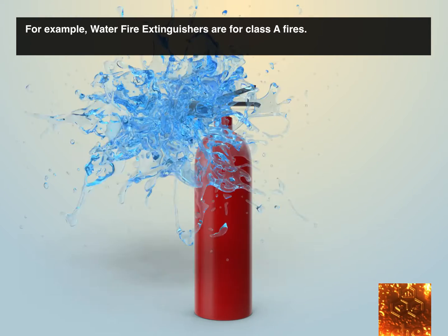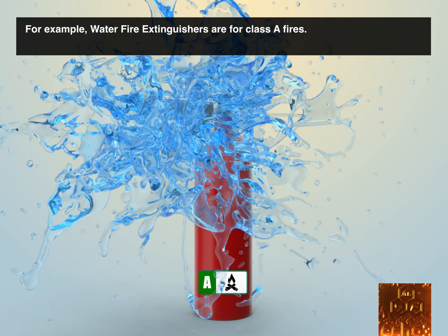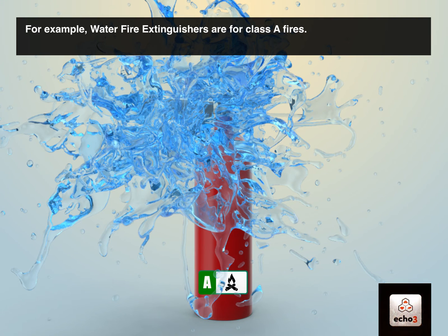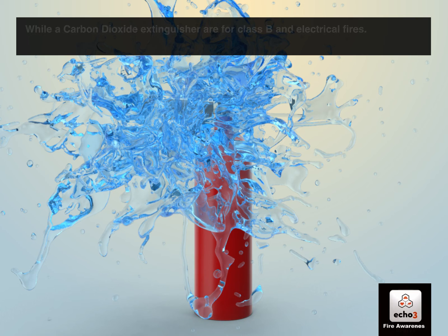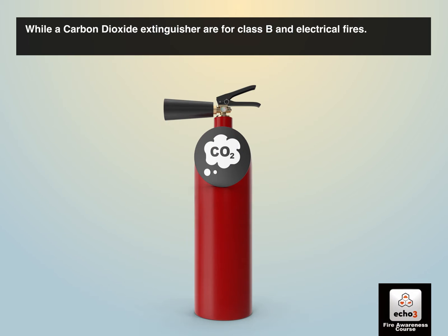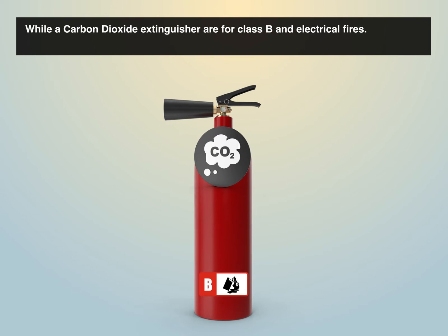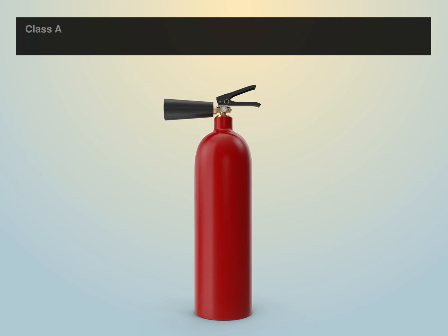For example, water fire extinguishers are for class A fires, while carbon dioxide extinguishers are for class B and electrical fires.